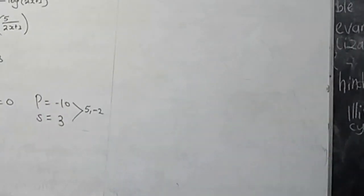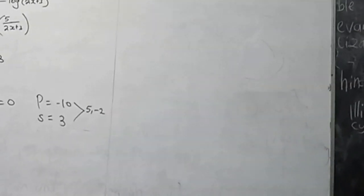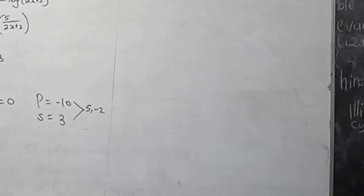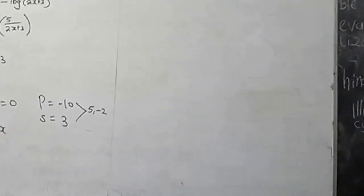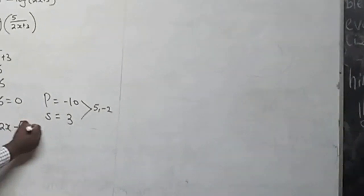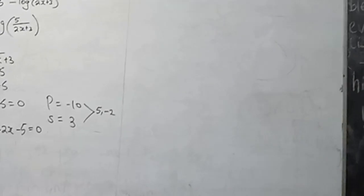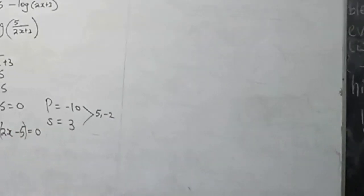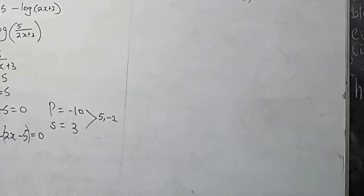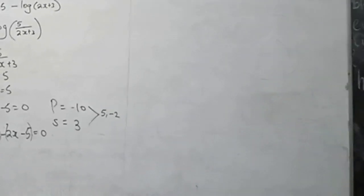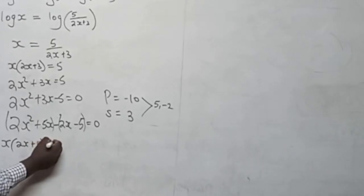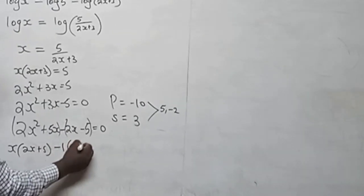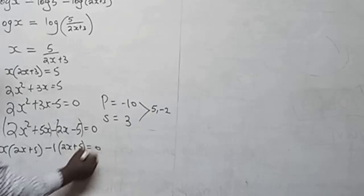So 5x and negative 2x. So this is going to be 2x squared plus 5x minus 2x minus 5 equals 0. So we will group them like that and then factorize out x here. X into 2x plus 5 minus here negative 1 into 2x plus 5 equals 0.